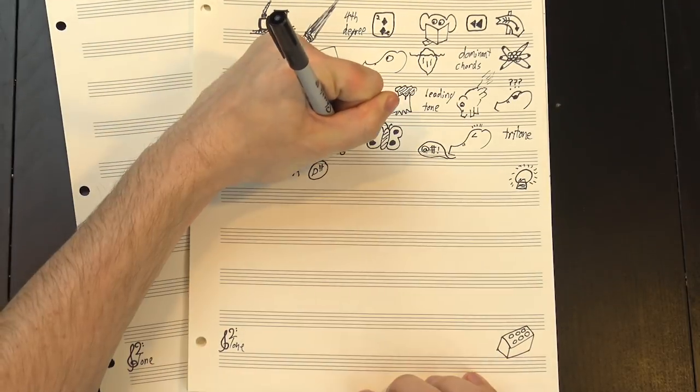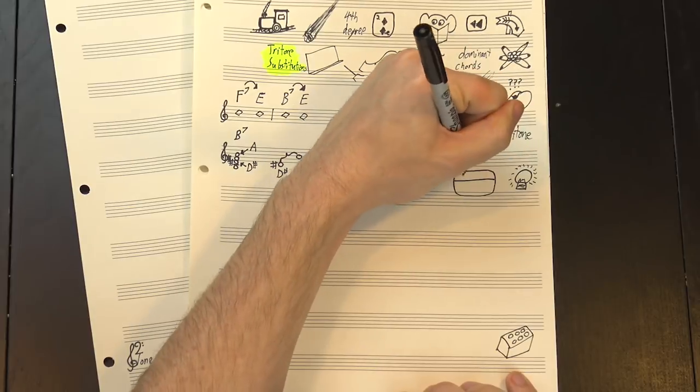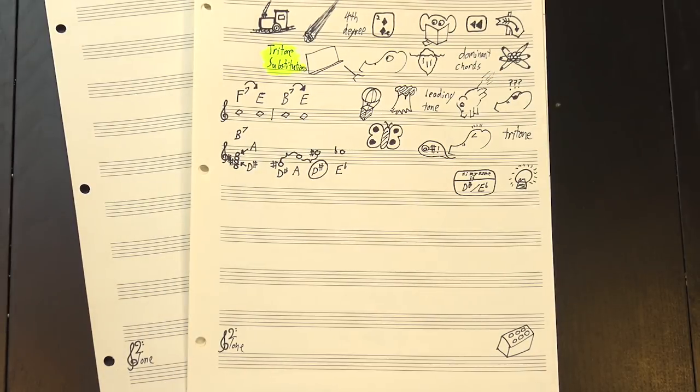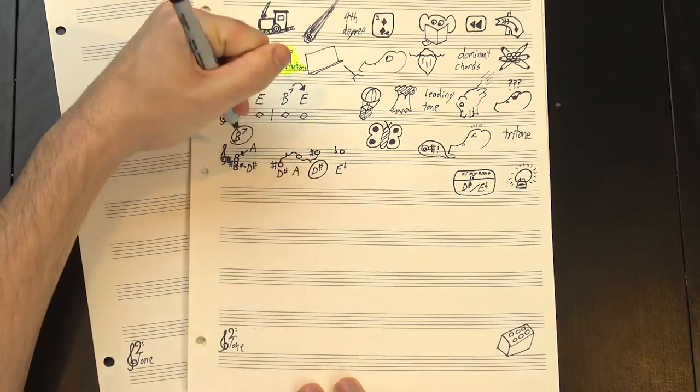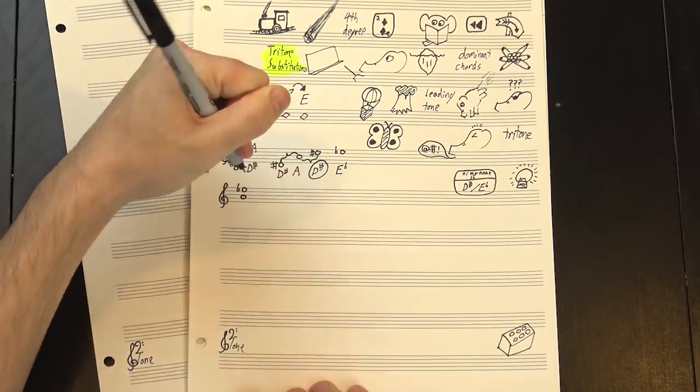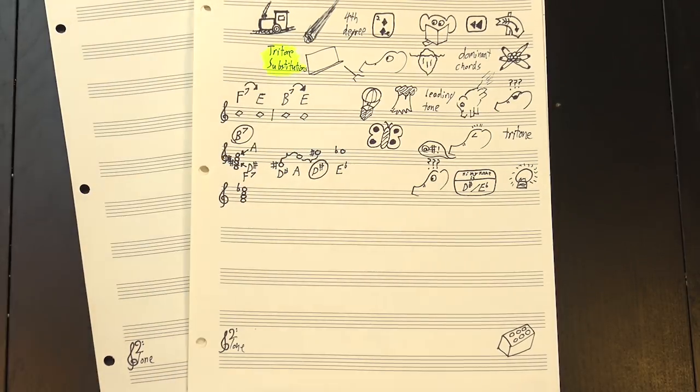But here's the thing: D-sharp sounds exactly the same as E-flat. They're just two different names for the same note, but if we spell it like that, suddenly we don't have the tritone from B7 anymore. Suddenly, we've got the 3rd and 7th degrees of a completely different dominant chord: F7.